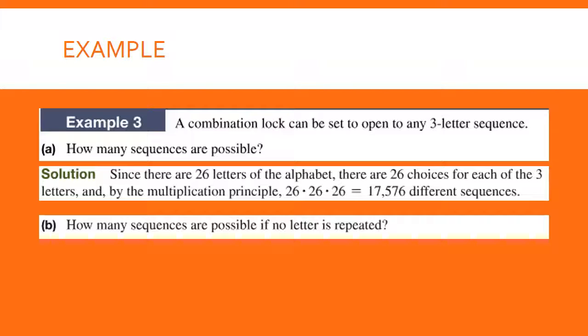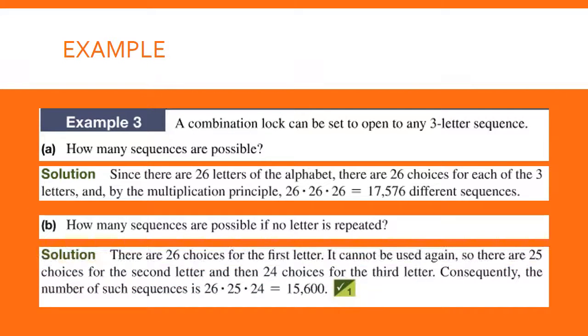Now part B says: what if you can't repeat? In that case, we have 26 choices for our first letter, 25 for our second, and 24 for our third, giving us 15,600 possible combinations.